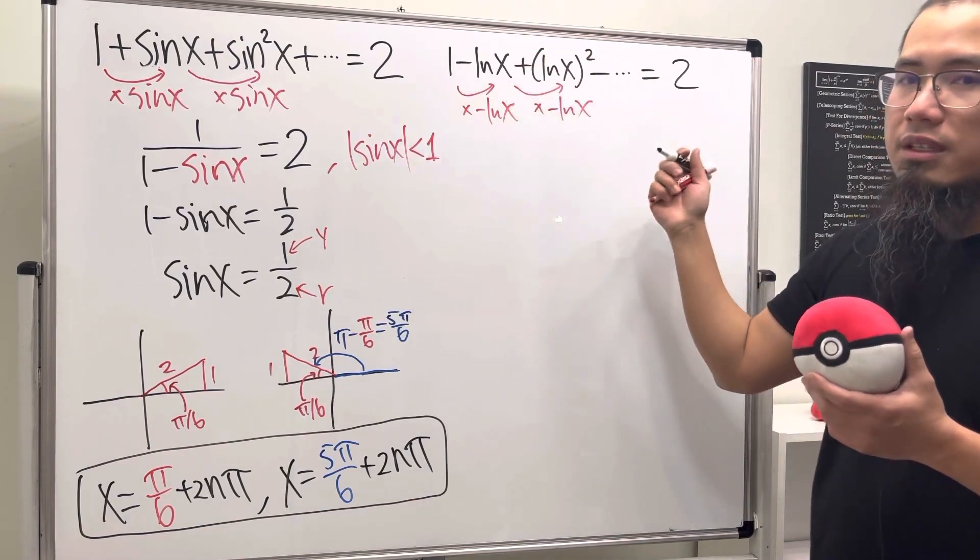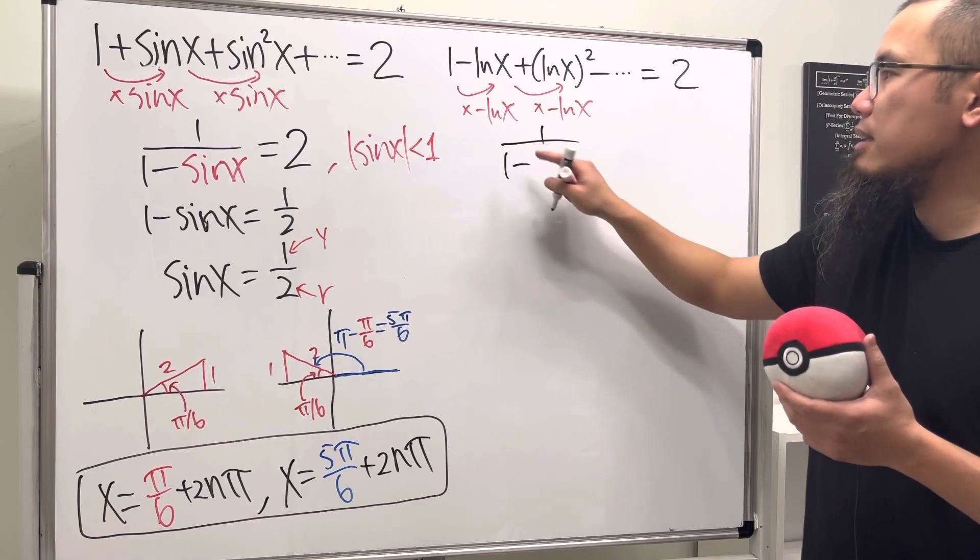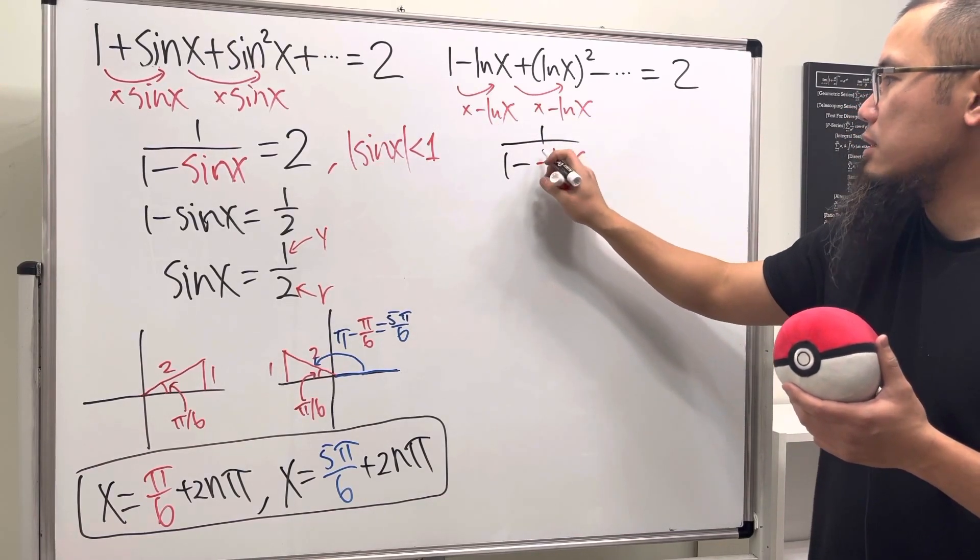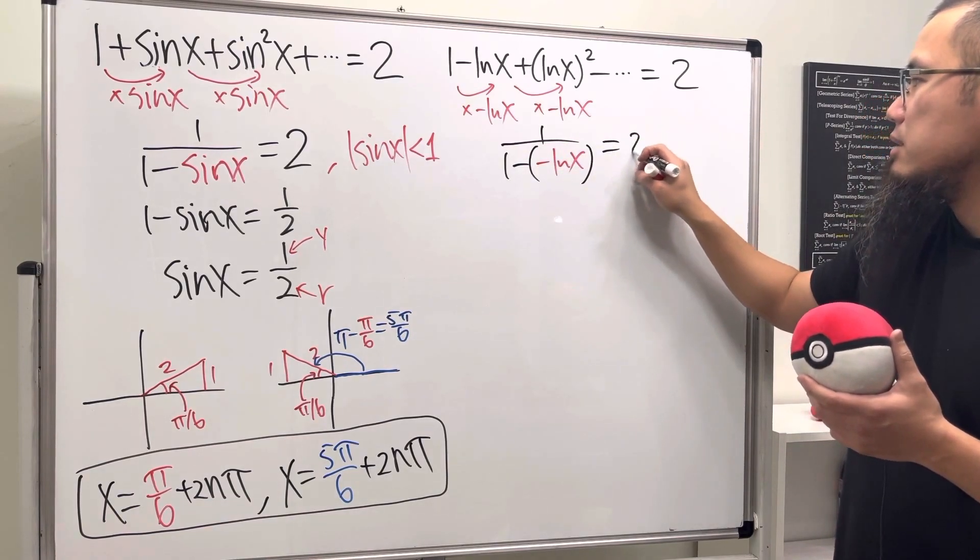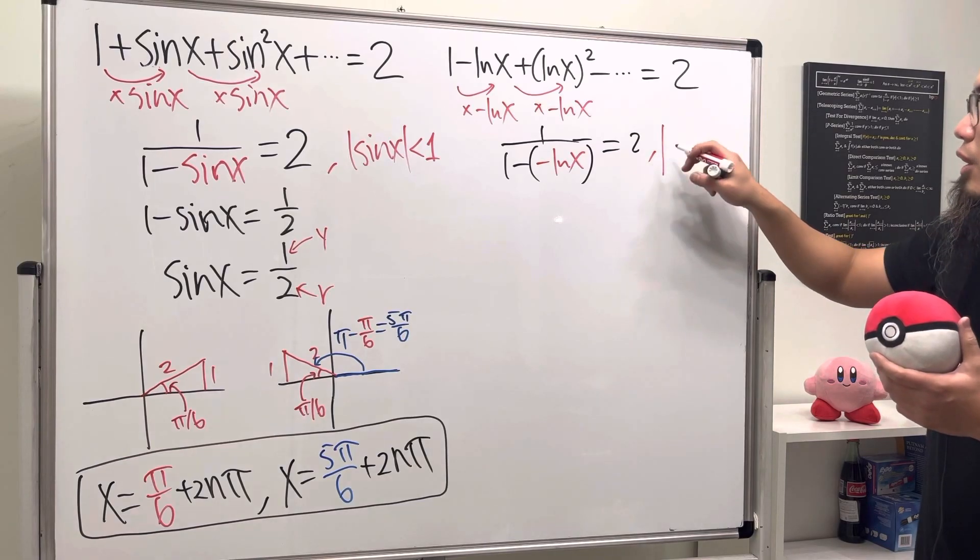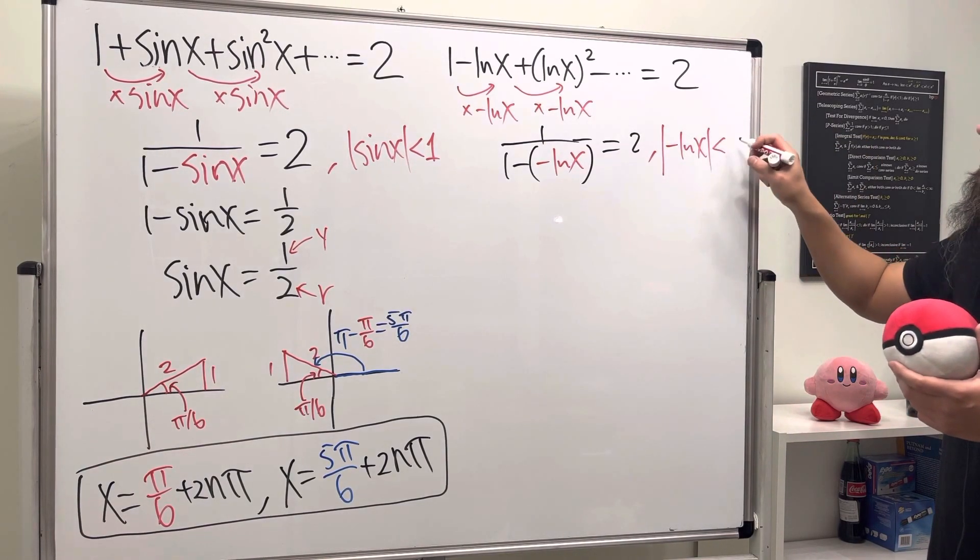Same thing, assuming that this right here does converge, it will be one over one minus the common ratio, which is negative ln x, like this. And again, make this equal to two. Then again, we just have to make sure that we can actually solve absolute value of negative ln x—we need this to be less than one.